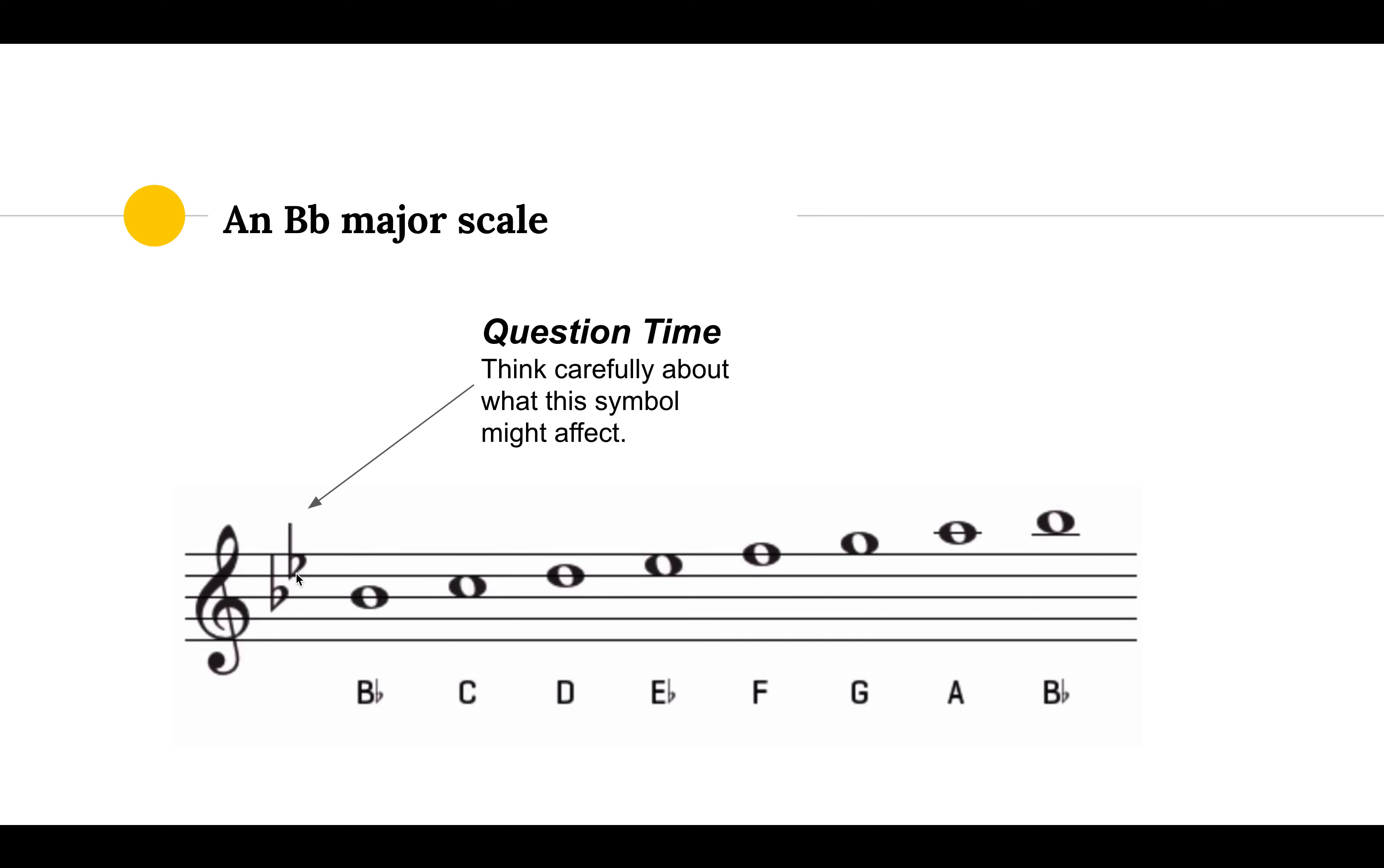So we have a slightly different setup for our accidentals here, where B-flat major, our tonic note is B-flat. We then follow the musical alphabet up: C, D, E, F, G, A, B. Exactly the same principle.